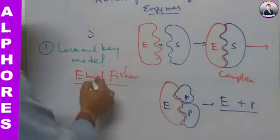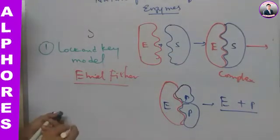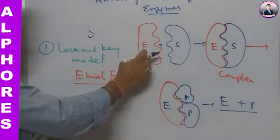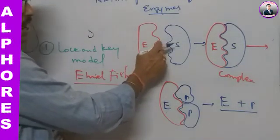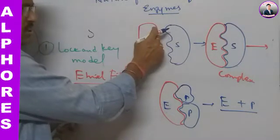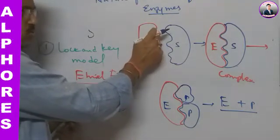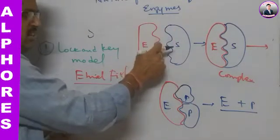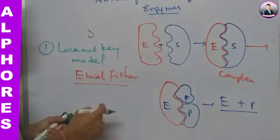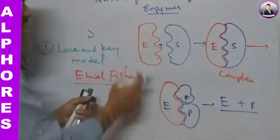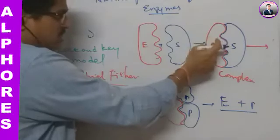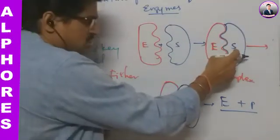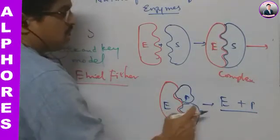Just like a lock and key model — how a lock will open with a specific key — similarly, every enzyme has specific active sites. The substrate molecules exactly fit into the active site. Once fixed, conformational change occurs, sometimes the enzyme alters its shape, then bonds start breaking and new bonds are constructed, converting substrate to products which come out.